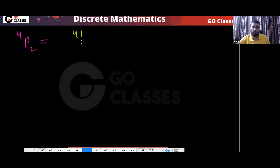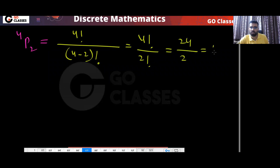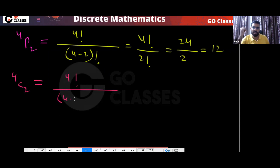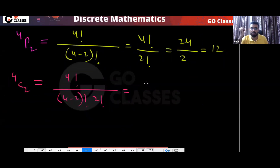So tell me what is 4P2. That will be 4 factorial divided by (4 minus 2) factorial — that is 4 factorial divided by 2 factorial. 4 factorial is 24, 2 factorial is 2, so the answer is 12. And what is 4C2? That will be 4 factorial divided by (4 minus 2) factorial into 2 factorial, which is 24 divided by 4 — that will be 6.